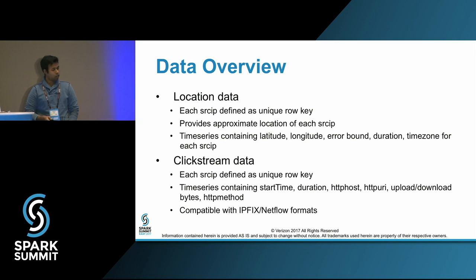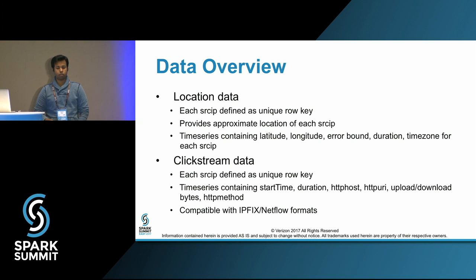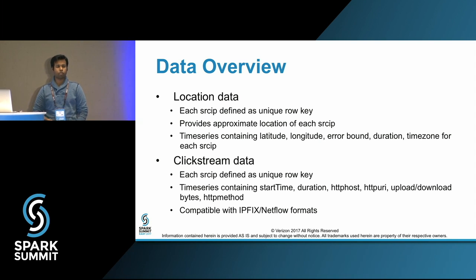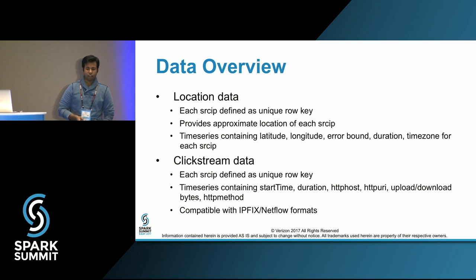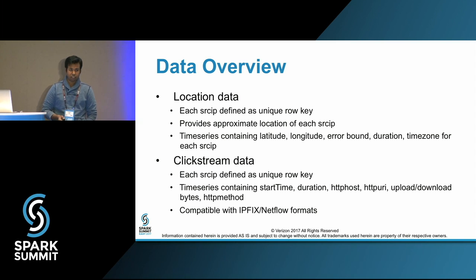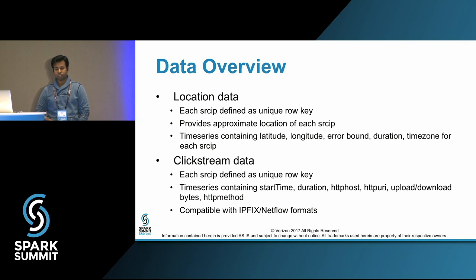I will give a bit of an overview of the data that we have. We have location data — what we really get is a router log. There are source IPs associated with each data record. These source IPs can be phones or other network devices, and they are the unique row keys. We get an approximate location for each source IP — these are time series with latitude and longitude.